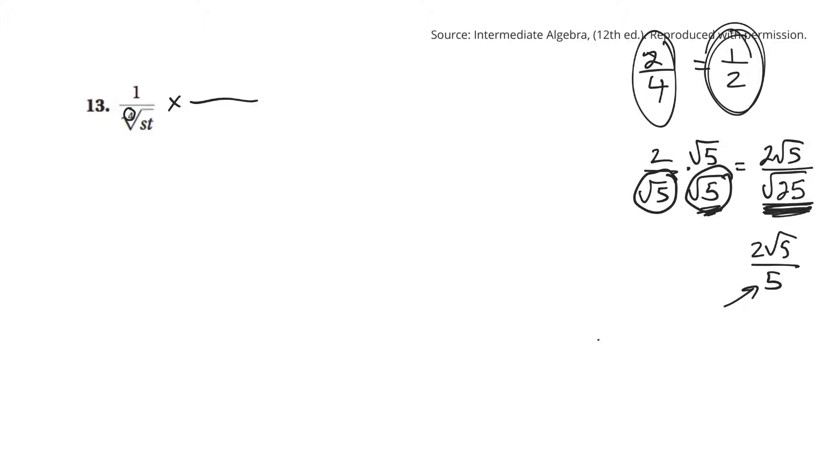So, for example, if I have the 4th root of 2 times 2 times 2 times 2, there's 4 2s. I can bring those out, and they would just, this would simplify to just plain 2. But I need 4 things that are the same inside.